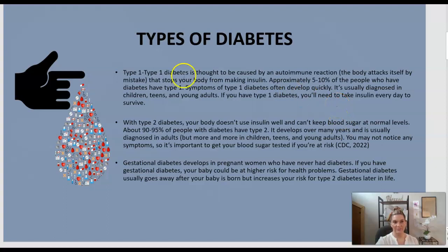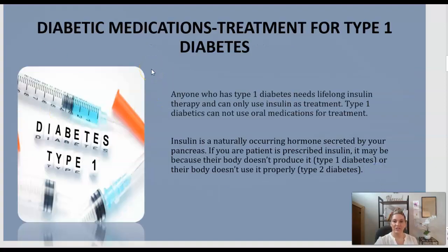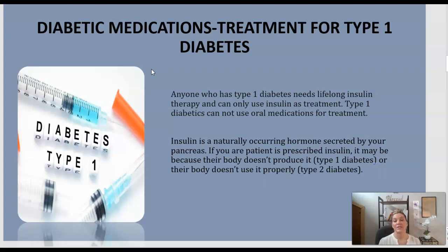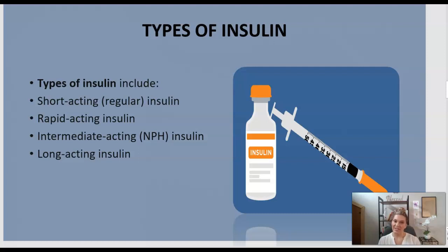For type 1 diabetes, anyone who has it will need lifelong insulin therapy and can only use insulin as treatment. Insulin is a naturally occurring hormone secreted by the pancreas. If a patient is prescribed insulin, it may be because their body doesn't produce it — as in type 1 — or their body doesn't use insulin properly or well enough, as in type 2 diabetes.